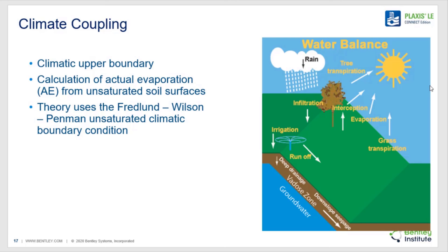It has become of particular importance in recent years how our geotechnical and hydrological systems interact with the climate. This feature makes the groundwater software unique in that it implements a rigorous calculation of actual evaporation. Actual evaporation is not to be confused with potential evaporation. As the soil desaturates, the actual evaporation rate begins to deviate from the potential evaporation rate. The Plaxis LE groundwater software is the only software in the world to implement the Quidland-Wilson-Tenman method of estimating actual evaporation. Several years of research have been invested to refine the software to model it correctly.